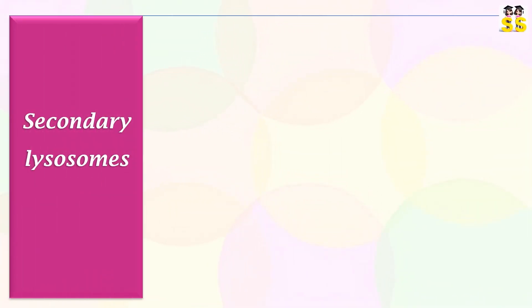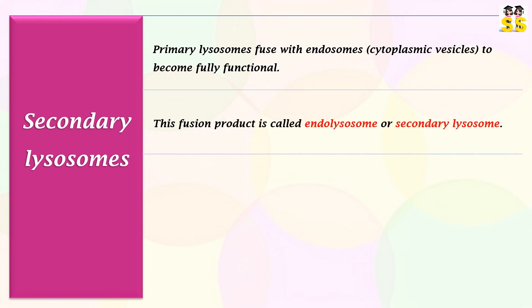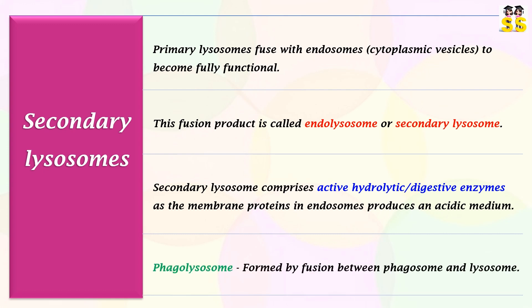Secondary lysosomes: when primary lysosomes fuse with endosomes, their contents mix and they become fully functional. This fusion product is called an endolysosome or secondary lysosome. Secondary lysosomes comprise active hydrolytic enzymes due to the acidic environment of the endosome. A phagolysosome is formed by fusion between a phagosome and a lysosome.